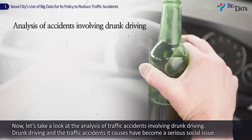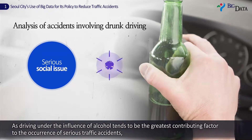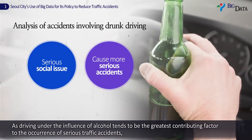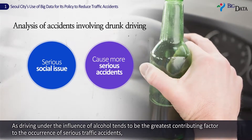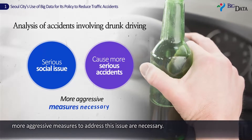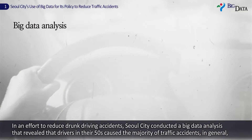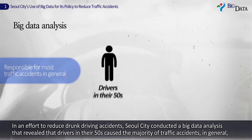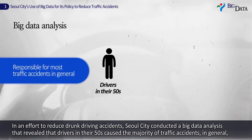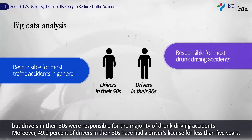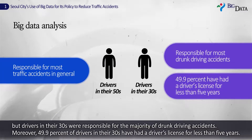Now let's take a look at the analysis of traffic accidents involving drunk driving. Drunk driving and the traffic accidents it causes have become a serious social issue, as driving under the influence of alcohol tends to be the greatest contributing factor to serious traffic accidents, making more aggressive measures necessary. Seoul City conducted a big data analysis that revealed that drivers in their 50s caused the majority of traffic accidents in general, but drivers in their 30s were responsible for the majority of drunk driving accidents. Moreover, 49.9% of drivers in their 30s involved had held a driver's license for less than five years.